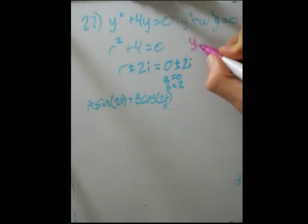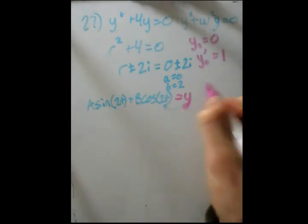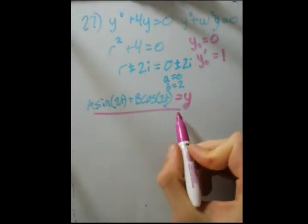Alright, so, but we have an initial value as well. So we have y of 0. My notation, the subscript is time 0. And y prime of 0 is equal to 1. So now we have to solve this with these initial conditions. So the first one is easy. This is y. And it's a good time for a color change.